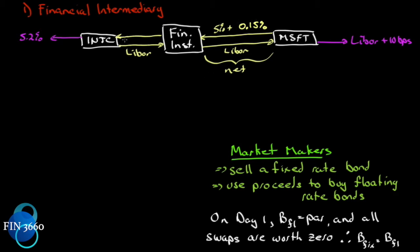The financial institution will forward on to Intel five percent minus 0.15%, because we're talking about two separate contracts. The financial institution is sitting on this side of the swap with Microsoft — that's the commission for that — and on this side of the swap with Intel — that's the commission on that. So Intel and Microsoft could have dealt with each other, eliminated the middleman, and saved the commission on both sides, but they don't know that. This also gets netted out, and the financial institution makes that spread.